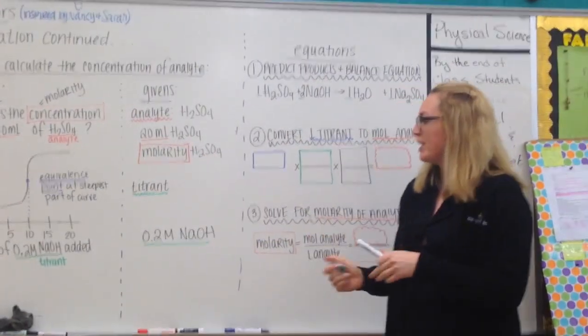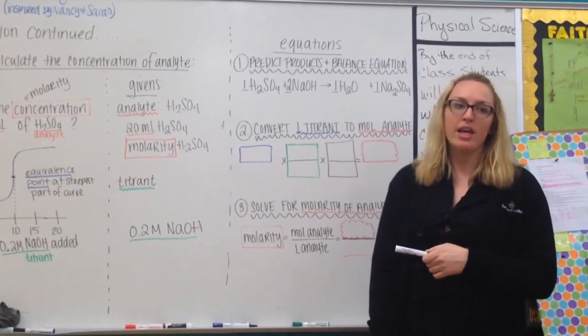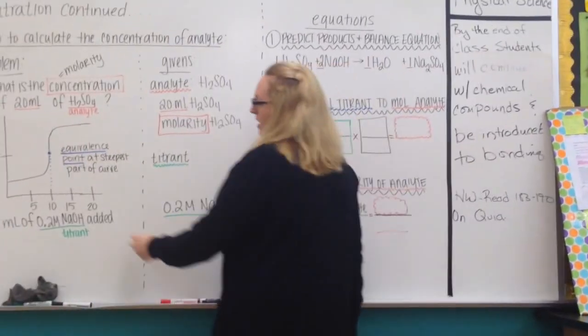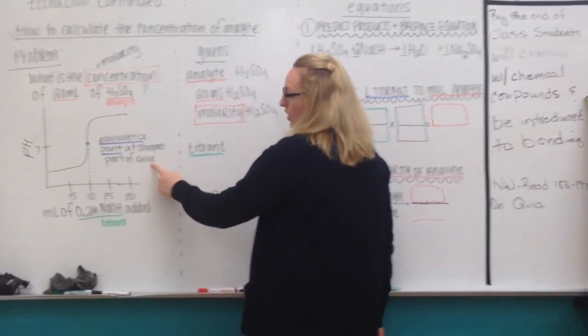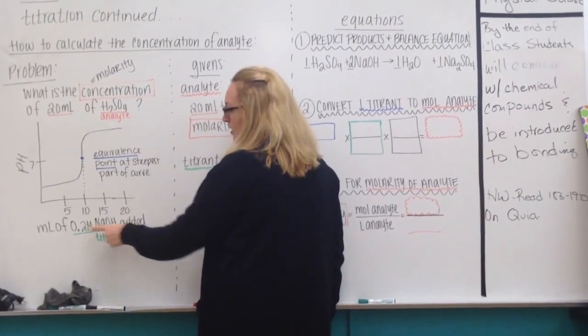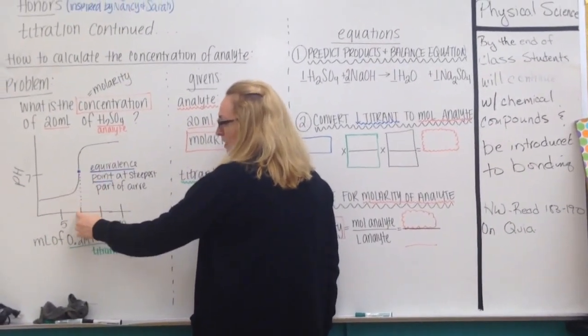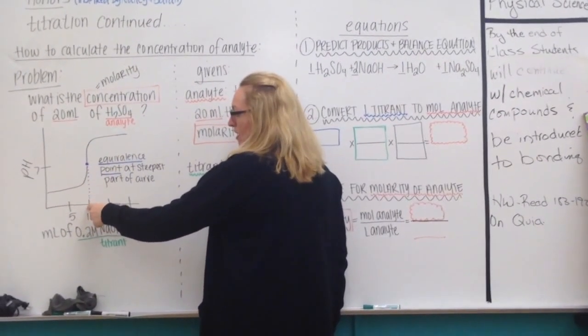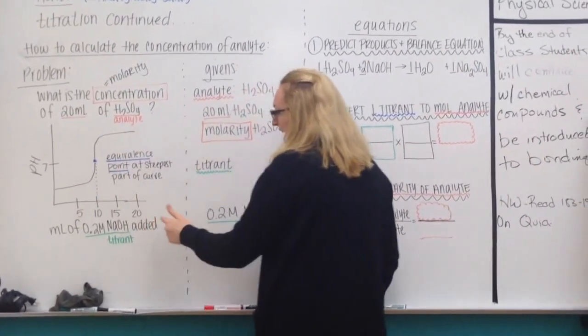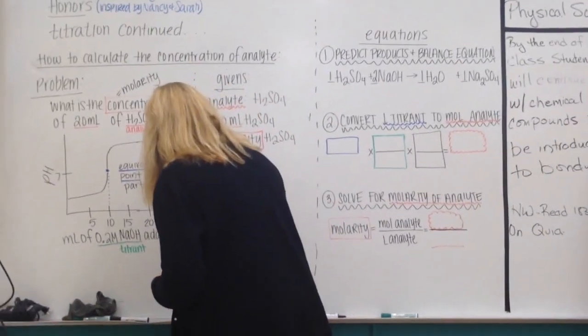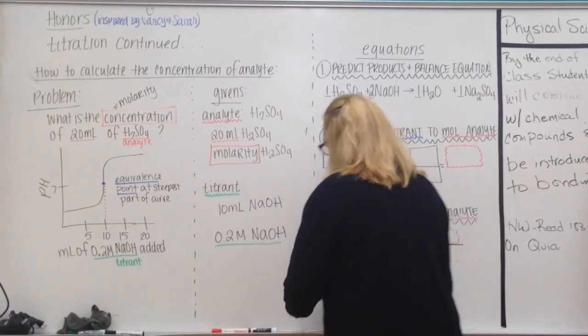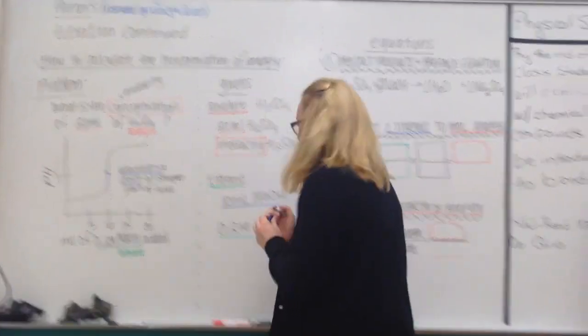The second piece of information I'm going to get from that graph is the amount of titrant needed to reach the equivalence point. So what I do is the equivalence point is at the steepest part of the curve, usually around a pH of 7. I look at the number of milliliters and I draw a line down, it's approximately 10. So the equivalence point is reached when 10 milliliters of titrant is added.